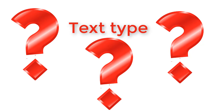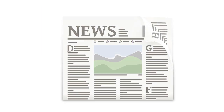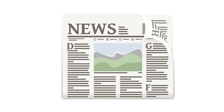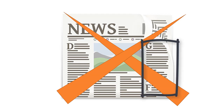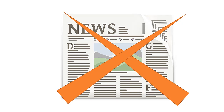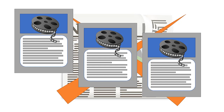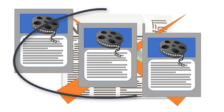The first thing to think about is the type of text you can use, because some texts definitely work better than others. If you've got something that's continuous prose like a newspaper article, this doesn't work so well. If you split this up into three, the person who gets the third part isn't going to find it very easy to get the gist of the whole thing.